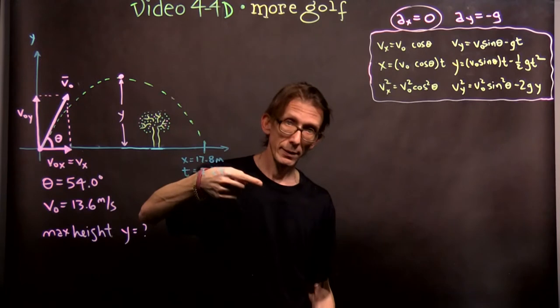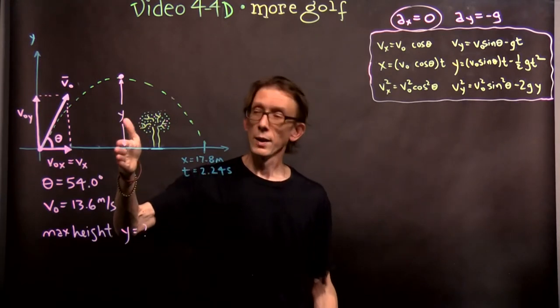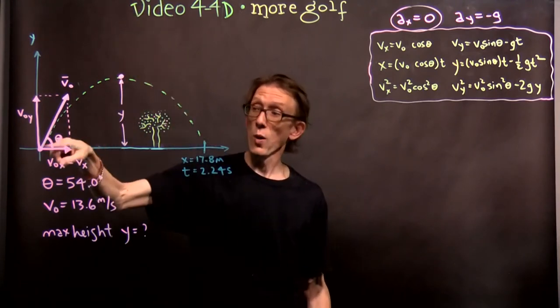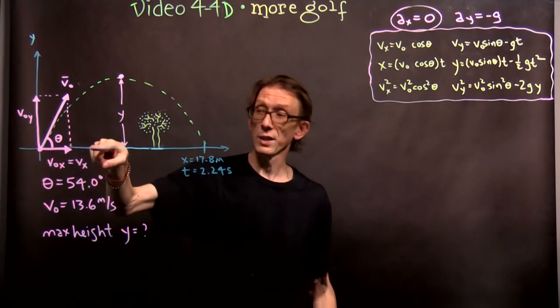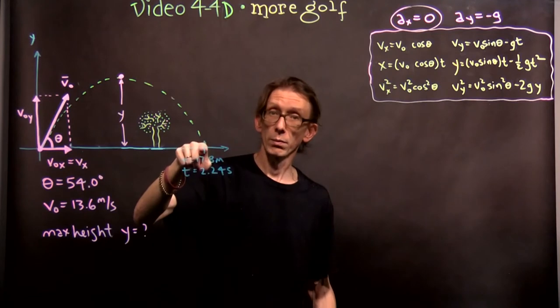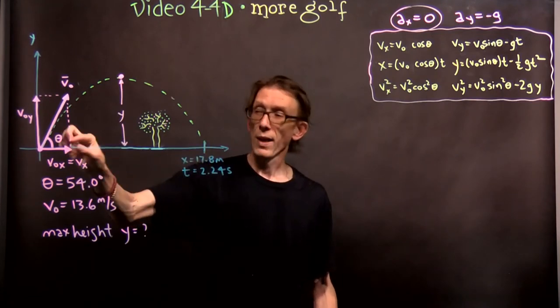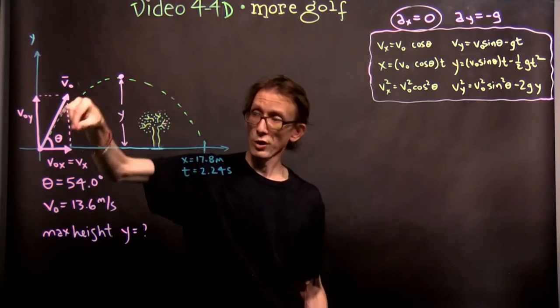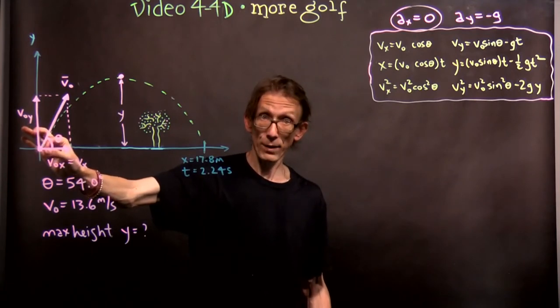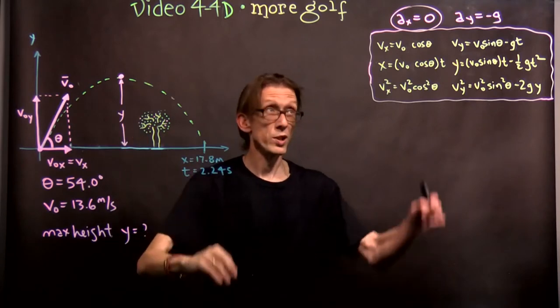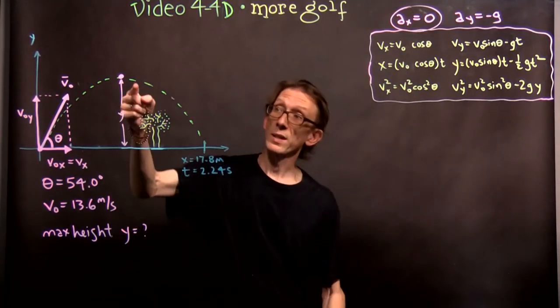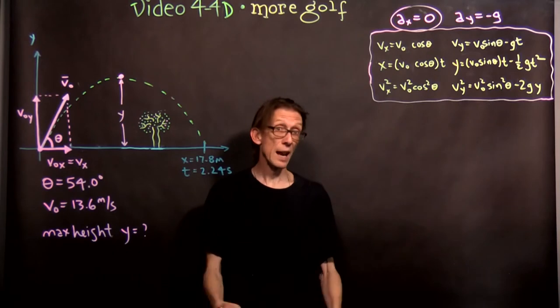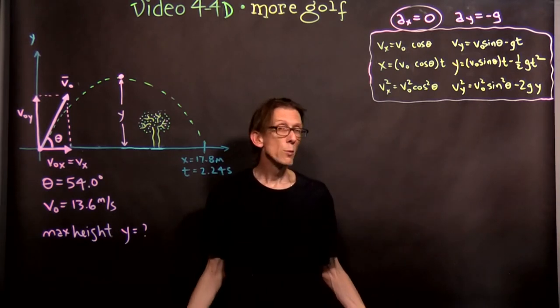It never stops moving to the right. If you watched its shadow, you know, if the sun was right overhead shining straight down, and you watched its shadow, its shadow would move at a constant velocity between the tee and the place where it hits the green. It would never stop. That x-velocity remains constant. Imagine the sun being straight down and watching the shadow of the ball move. That tells you the x-velocity. It would be a constant velocity because there is no x-acceleration.